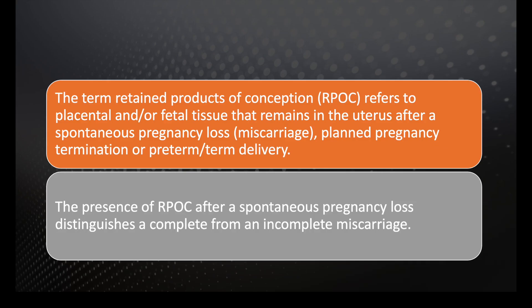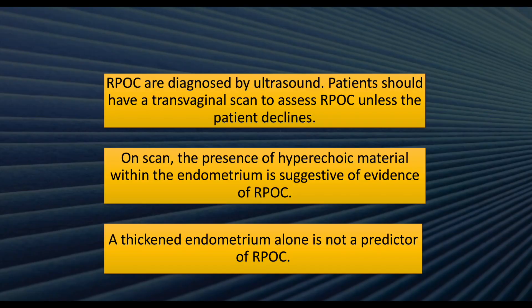Retained products is one of the common problems of early pregnancy. It is defined as the pregnancy products that remain after miscarriage or termination of pregnancy, or after delivery. It is in fact the only thing that differentiates an incomplete from a complete miscarriage.